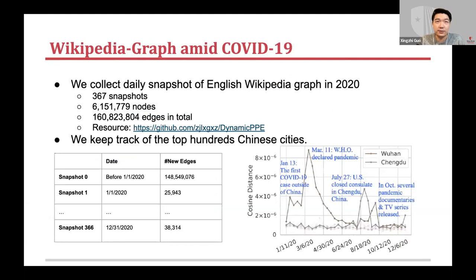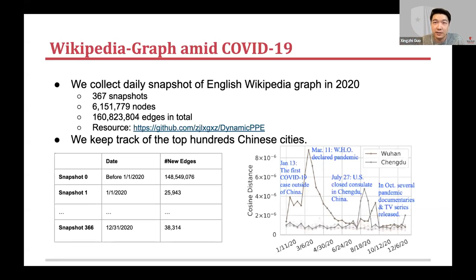Now let's see the experiment results. We collected English Wikipedia graph snapshots every day in 2020. As mentioned, it's a very large dynamic graph — roughly 30,000 new edges inserted every day, as seen in this table. We released the data in a GitHub repository so it's easy to access. We tracked Wuhan together with hundreds of other Chinese cities. This figure shows the changes detected in the embedding space. The curve of Wuhan is prominent with a huge peak, and we highlighted several peaks with annotations and found they are all correlated with the timeline of COVID.